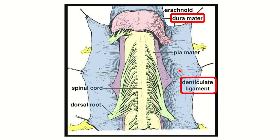Now we have to find a structure that is connected with both the dura mater and the spinal cord. We can see a fibrous sheet which connects the spinal cord with the dura mater — the dural sheet. This ligament is the denticulate ligament. The denticulate ligament attaches the spinal cord to the dura mater.